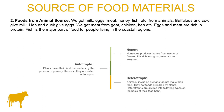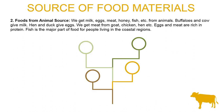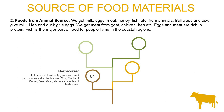Heterotrophs are divided into types based on their food habits. The first type is herbivore. The animals which eat only grass and plant products are called herbivores. For example, cow, elephant, camel, deer, goat, etc.